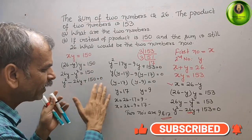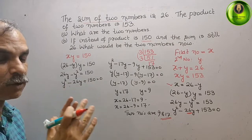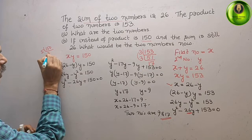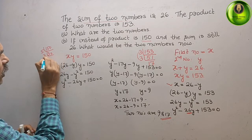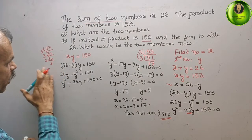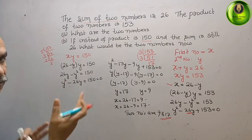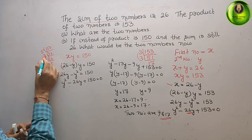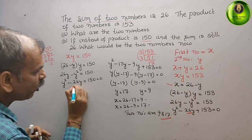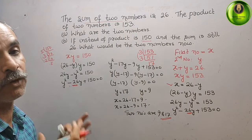If we try middle term splitting, we look at factors of 150: 5 and 30, 3 and 10, 2 and 5. Checking combinations: 25 plus 6 is 31, or 15 plus 10 is 25. We cannot get 26 from any combination. So we will use the quadratic formula instead.